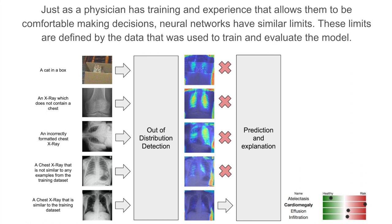Just as a physician has training and experience that allows them to be comfortable making decisions, neural networks have similar limits. These limits are defined by the data that was used to train and evaluate the model. We would like to use out-of-distribution detection to limit what models process.